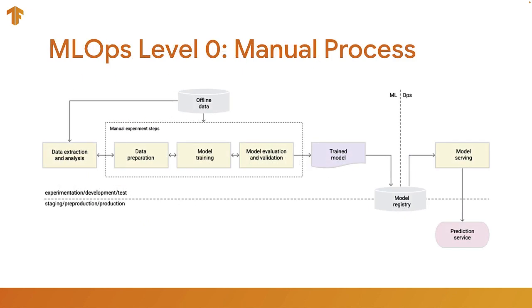At a very low level, this is the manual process — the level zero ML Ops process — that most people start out at. This includes a lot of manual steps, and what we want to do is move from this into a much more automated process.